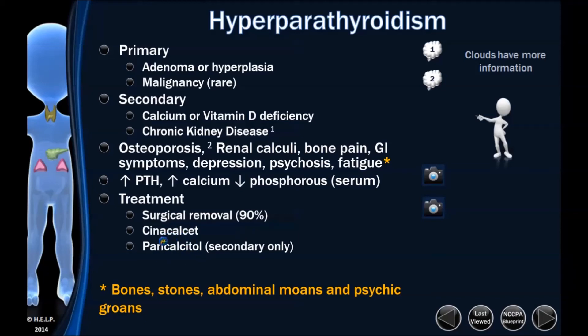Cinacalcet can be used for either primary or secondary hyperparathyroidism, but is mostly used for secondary. Paricalcitol can be used only for secondary. Both are very commonly used in end-stage renal disease.